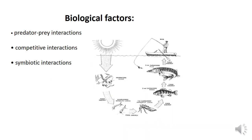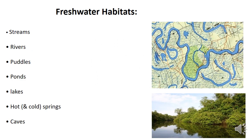Biological factors also shape the ecosystem, including predator-prey interactions, competitive interactions, and symbiotic interactions — among species, within species, or between species. There are different freshwater habitats such as streams, rivers, pools, ponds, lakes, hot and cold springs, and caves.